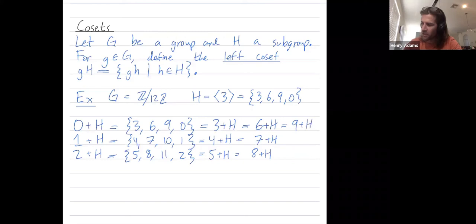9 plus H, 10 plus H, and 11 plus H—those cosets are also equal. So one pattern you'll notice is that two cosets can be equal even if the G out front is not the same.